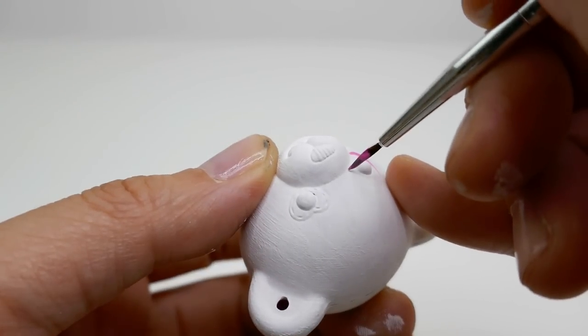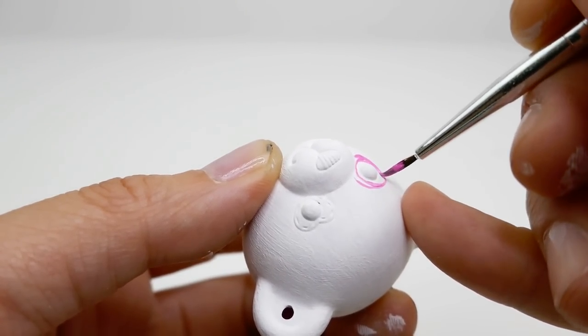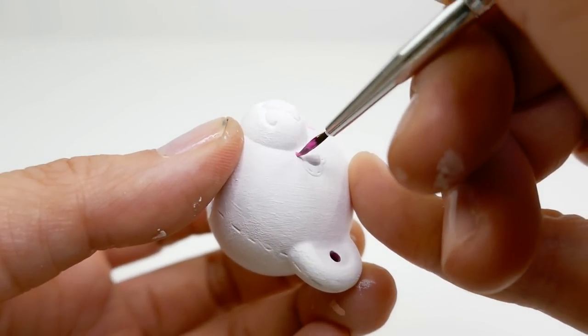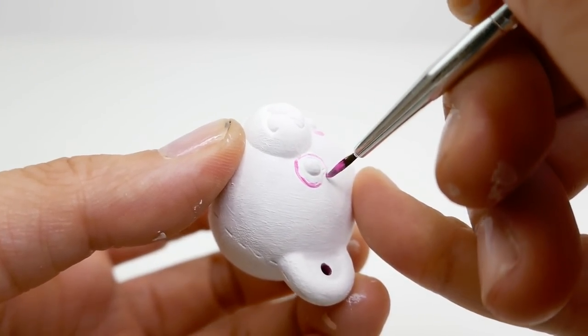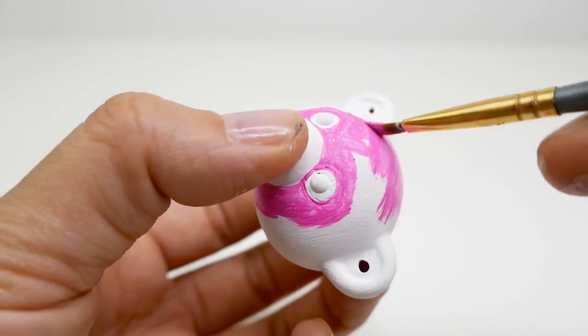Next, we're going to paint the head pink. But first, we're going to color around the areas we want to keep white, which is around the eyes. This way we won't accidentally paint over it. Now we can safely fill in the rest of the head.